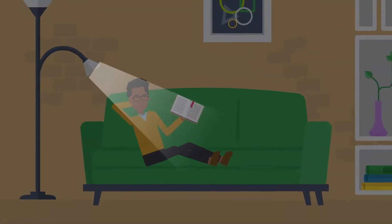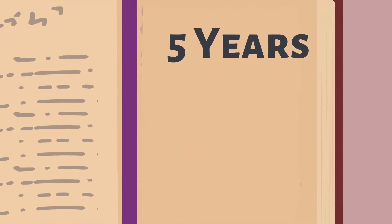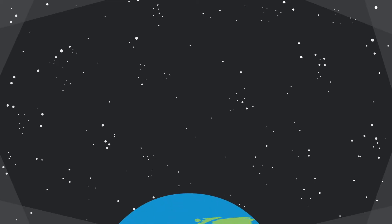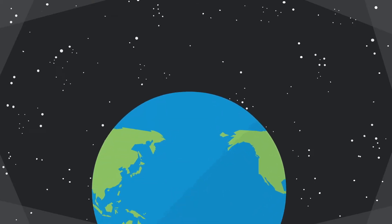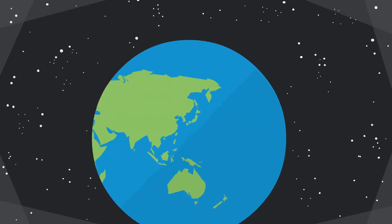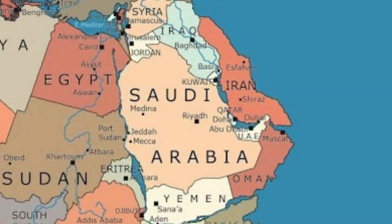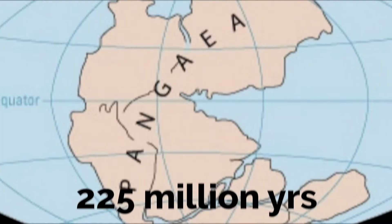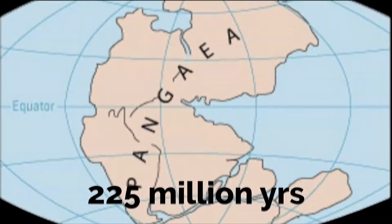Here is the story. It all started 250 million years ago. Currently, this is how the Earth looks, but 250 million years ago it didn't — it used to be one supercontinent called Pangea. This is 225 million years ago.